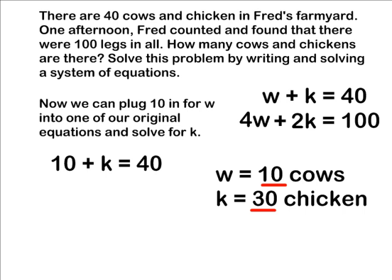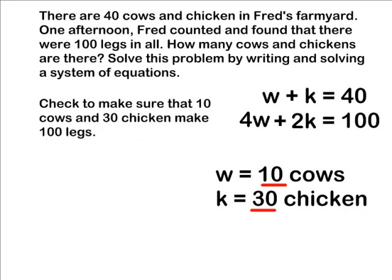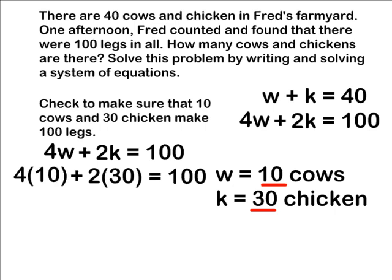Now we should check to make sure 10 cows and 30 chickens make 100 legs. We can verify this by plugging 10 and 30 into our variables in the second equation. When you solve the left-hand side, it should equal 100 legs.